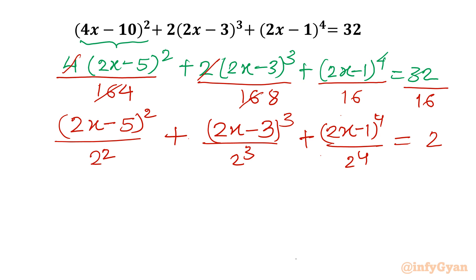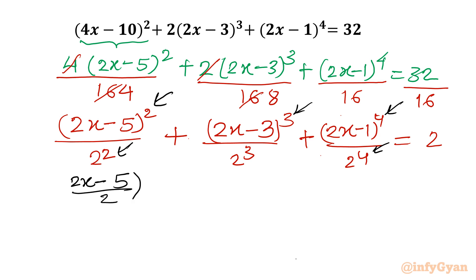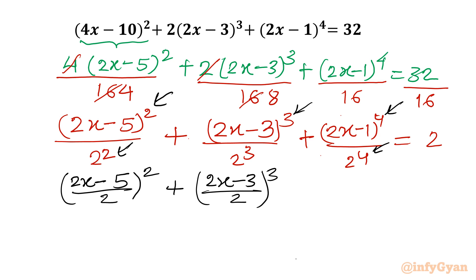Now I will club the denominator into the bracket in the numerator, since the powers are the same. So I write: ((2x - 5)/2)² + ((2x - 3)/2)³ + ((2x - 1)/2)⁴ = 2.